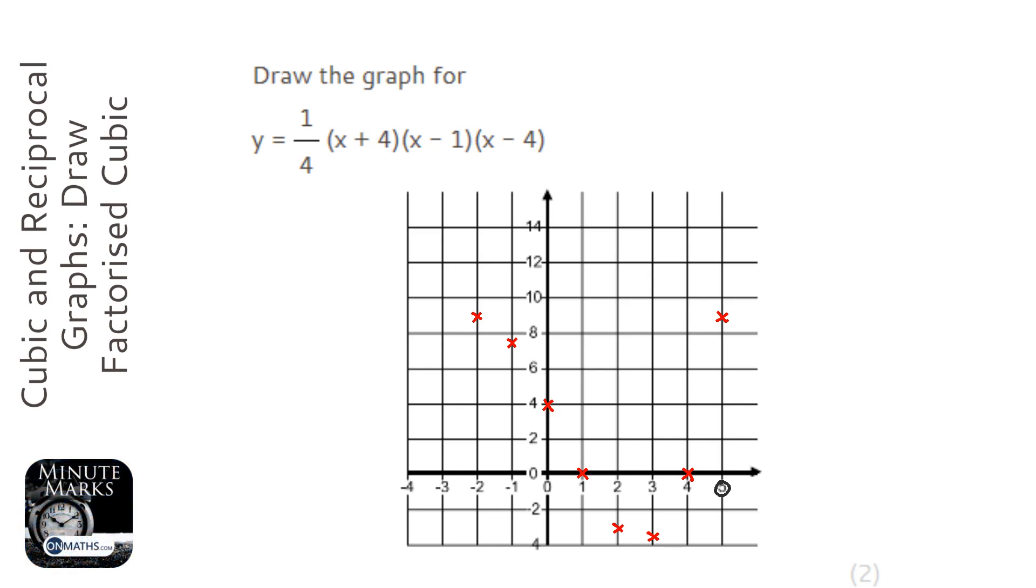So putting in minus two gives us the answer of nine, so it's not shooting up, which we would think, which it would in a quadratic. So I'm going to put in minus three, and it goes to seven, so this is all very strange. Let's put in minus four, and it shoots back to zero.